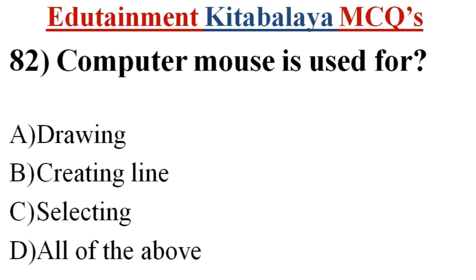Question number 82. Computer mouse is used for? A. Drawing. B. Creating line. C. Selecting. D. All of the above. Correct answer is D. All of the above.